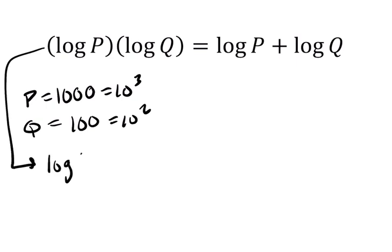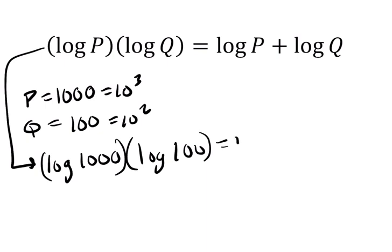So this is saying take the log of P, so the log of 1,000, and multiply by the log of 100, log of Q. That should be the same thing as the log of 1,000 plus the log of 100.